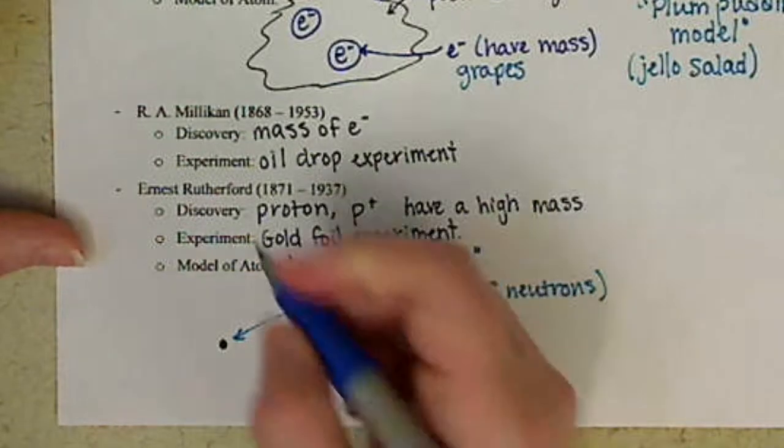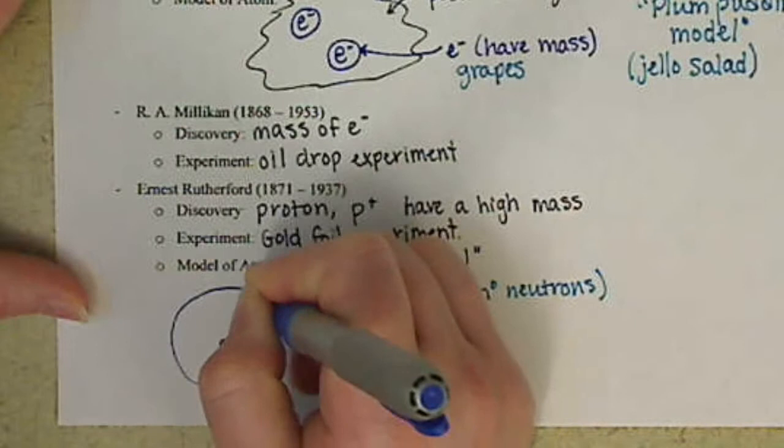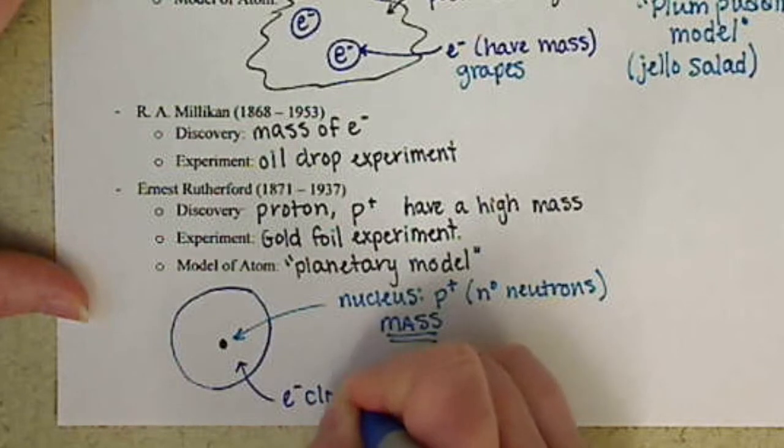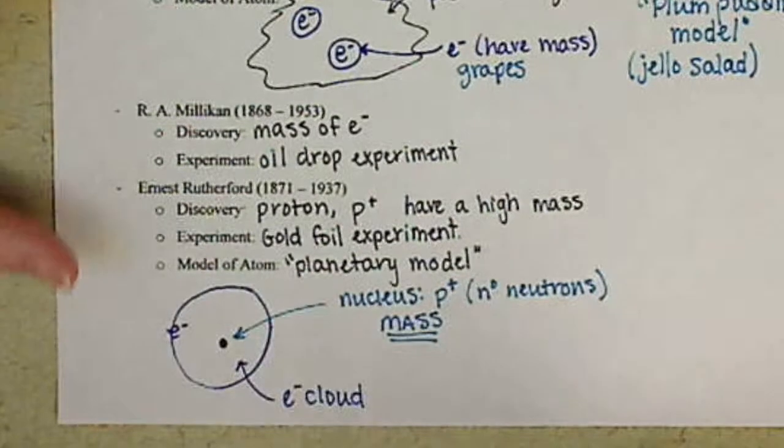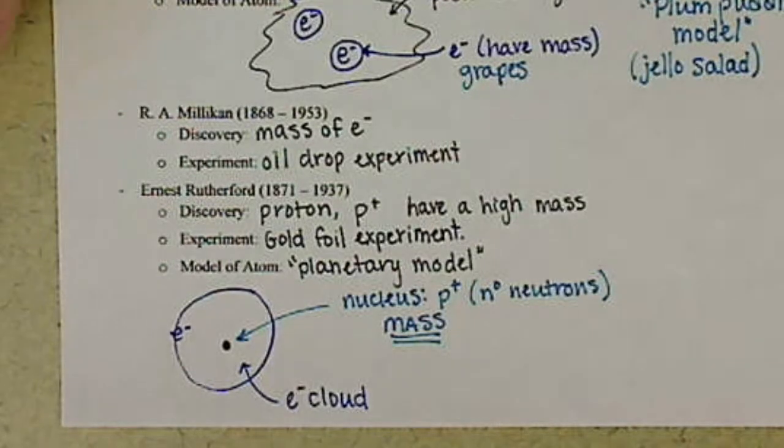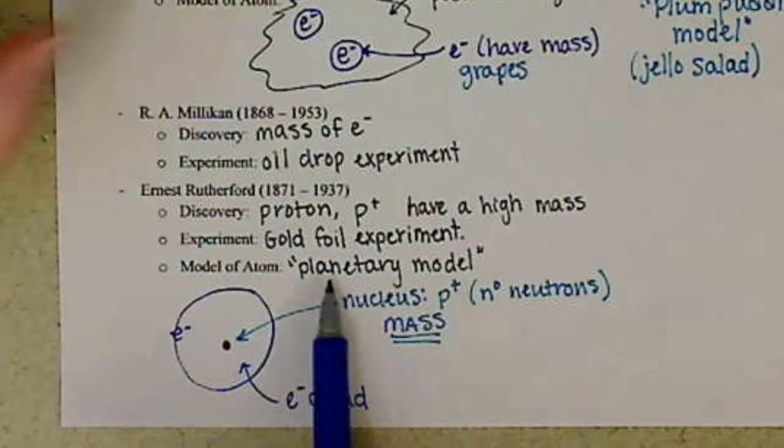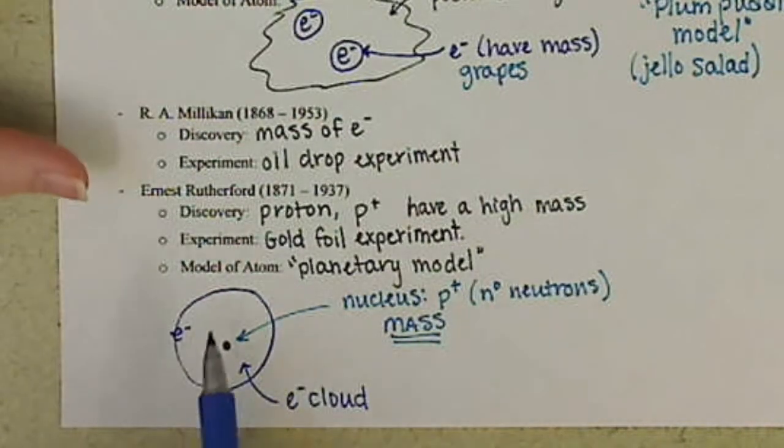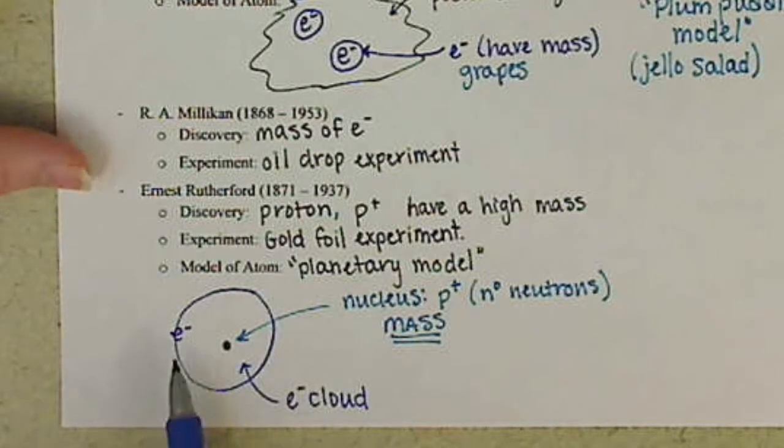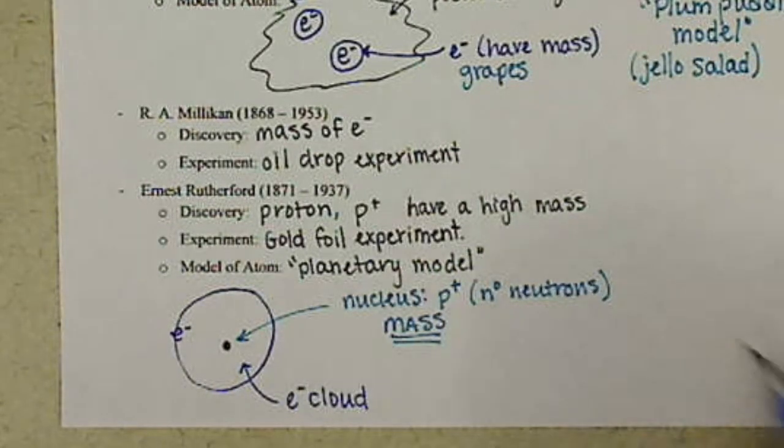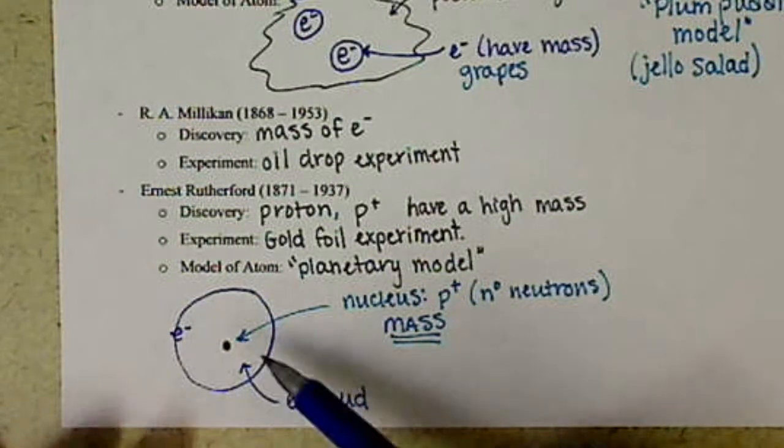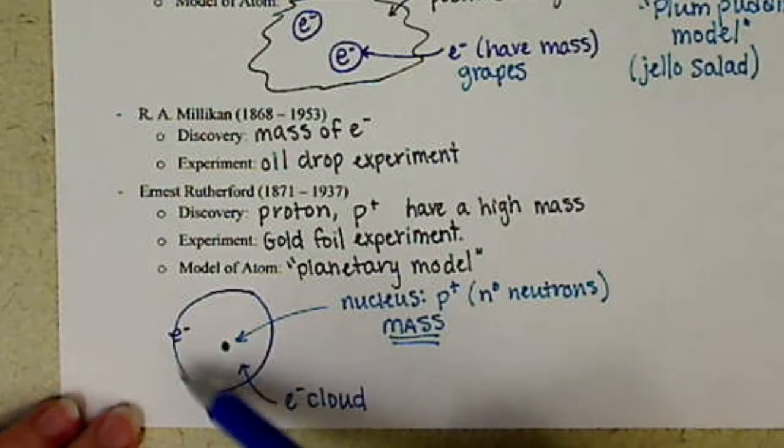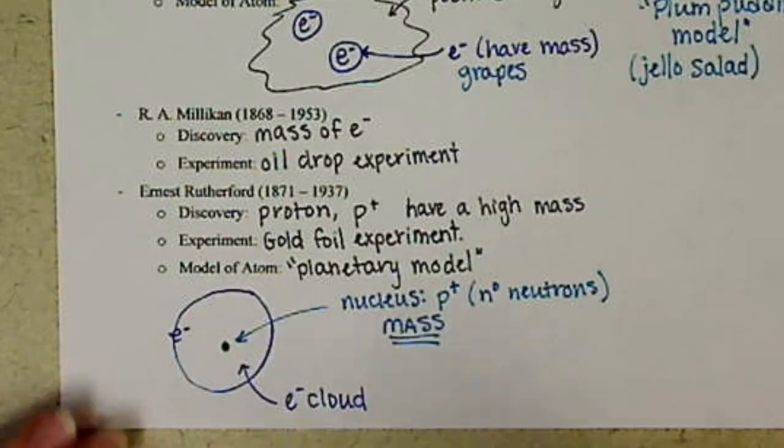And the mass of the atom is in that tiny little nucleus in the center. Then surrounding our nucleus, this is called our electron cloud. And basically that's where they say the electron can be found. It's nicknamed the planetary model because originally they thought these electrons were moving very fast, and they moved in kind of a circular orbit, much like the Earth and the planets orbit around the sun.